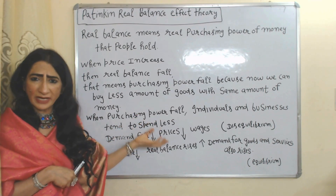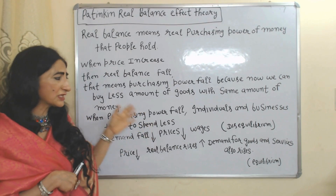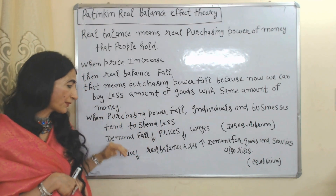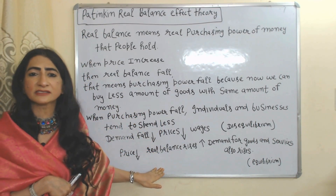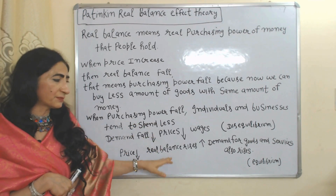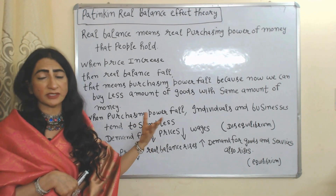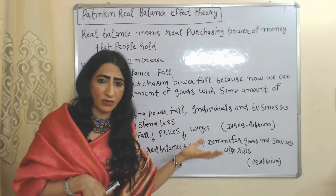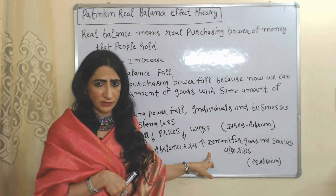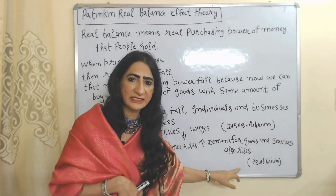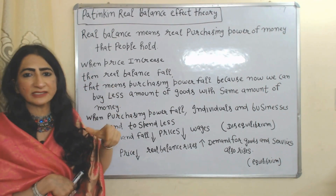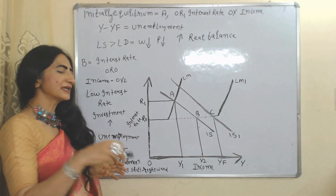Goods become very expensive, that's why businesses and individuals spend less amount of money. As a result, demand falls. When demand falls, prices fall and wages fall, eventually creating equilibrium in the economy. But when prices fall, real balance increases — purchasing power increases — and individuals and businesses will spend more, so demand for goods and services also increases and the economy will reach equilibrium.